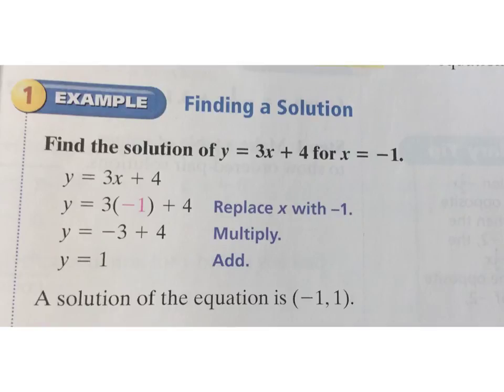Okay, so this first set is nothing more than really plugging and chugging. In other words, given this equation here, y equals 3x plus 4, wherever I see the x, I plug in a negative 1, because it says so right here.